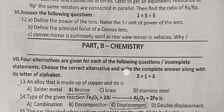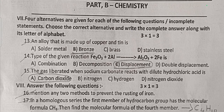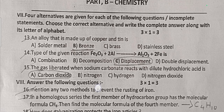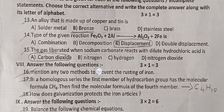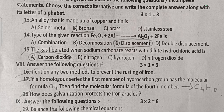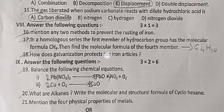Part B — Chemistry. Three multiple choice questions. Question 13: An alloy made up of copper and tin — answer is B: bronze. Question 14: The type of the given equation — answer is C: displacement reaction. Question 15: The gas liberated when sodium carbonate reacts with dilute hydrochloric acid — answer is carbon dioxide.